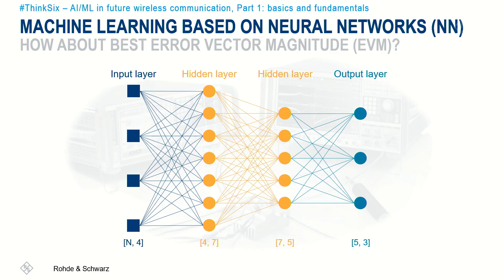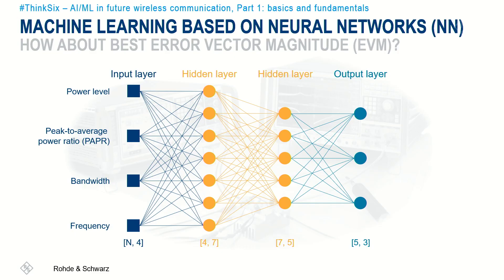Customers look for flat curves with the best EVM across a wide range of power levels. There are quite some settings to consider to achieve the best EVM performance at a given power level. Going back to machine learning, we could think about a neural network that takes input parameters such as power level, peak-to-average power ratio, bandwidth, and frequency of the signal. As output parameters, we want the reference level and attenuation setting to apply to our signal analyzer — and perhaps even automatic gain control and other parameters to tune the RF frontend to the desired settings. All we need is training data, for instance different kinds of 5G signals with different parameter combinations.